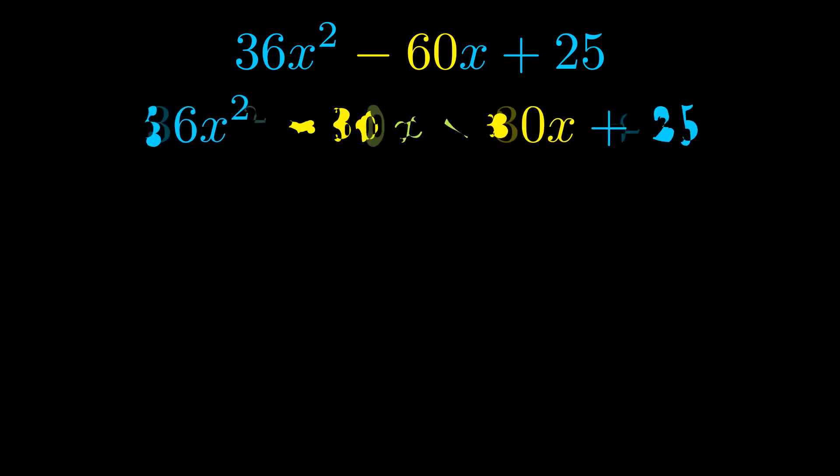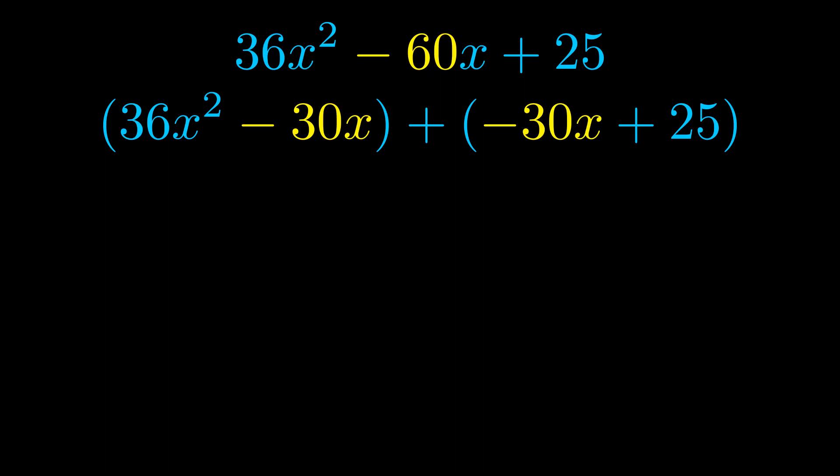Once we've done this, we go ahead and we put parentheses around the first term and the last term. And we do that so that we can take the greatest common factor out of both terms. We can see the greatest common factor is now outside in green.